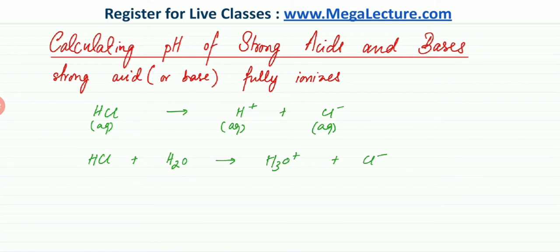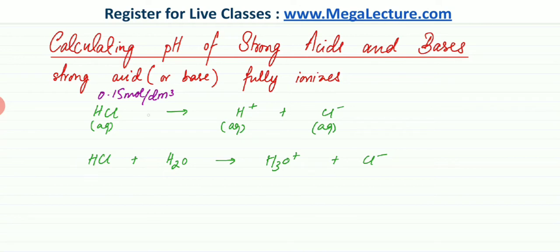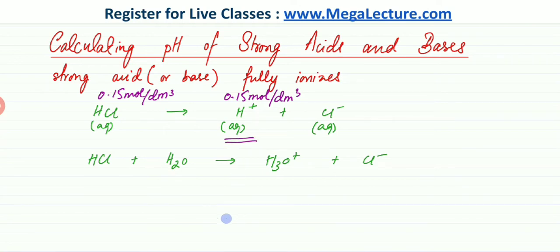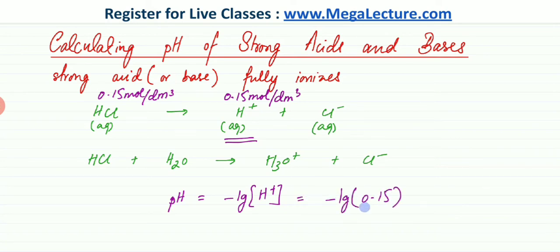Now let's find the pH of a strong acid or base. For strong acids and bases, finding pH is extremely easy because you can find the H⁺ concentration directly. For example, if the concentration of HCl is 0.15 mol per dm³, since it's a strong acid it fully ionizes in a 1:1 ratio, so the concentration of H⁺ is exactly 0.15 mol per dm³. pH is simply the negative log of [H⁺], which is the negative log of 0.15.